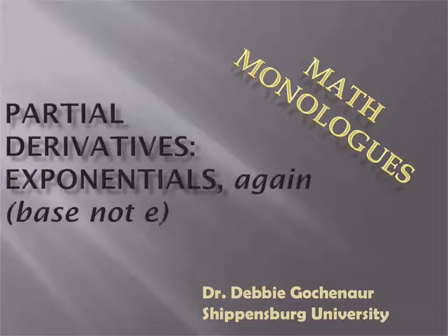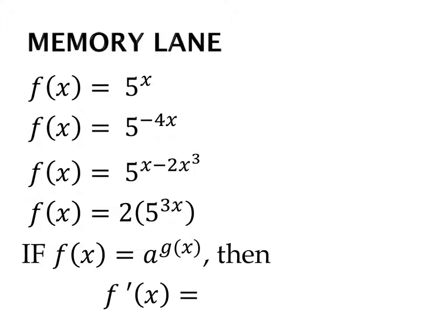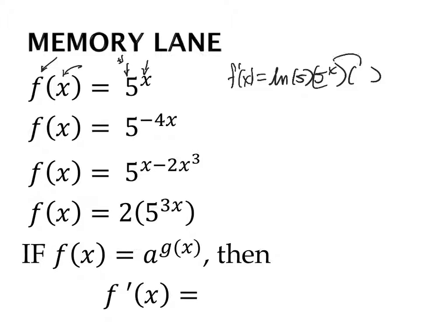Let's take a look at taking partial derivatives of exponentials again, but this time where the base is not e. For exponentials, we have a variable in the exponent and the base is some number — it's a function of x. When we want to take a derivative, we take f prime of x: it's the natural log of the base, times keep it exactly the way it is, then chain rule out the derivative of the exponent. Since we're taking the derivative with respect to x, the derivative of x is 1.